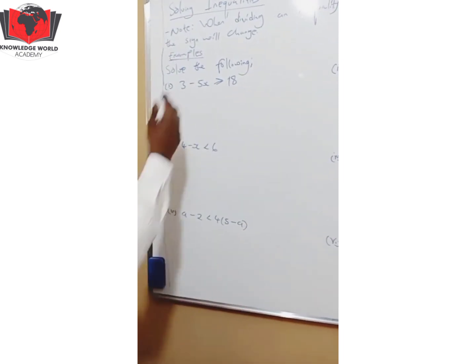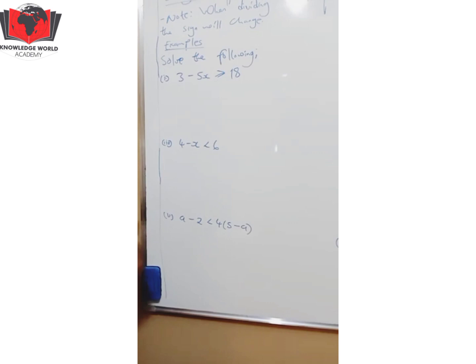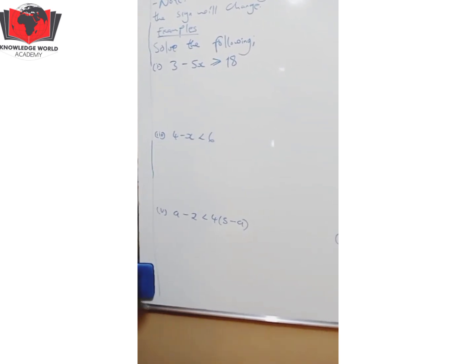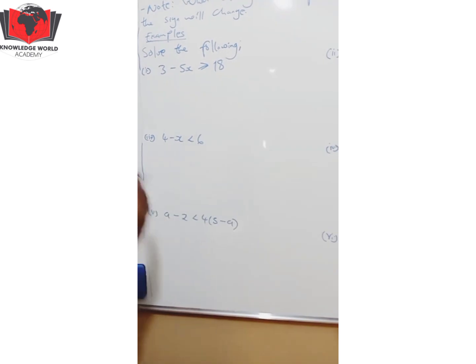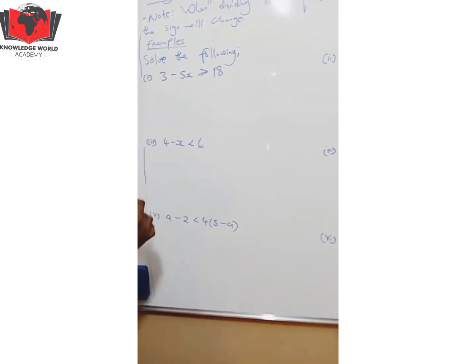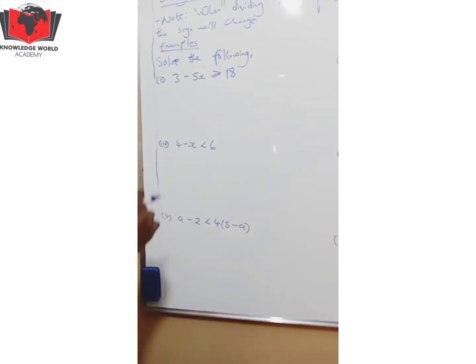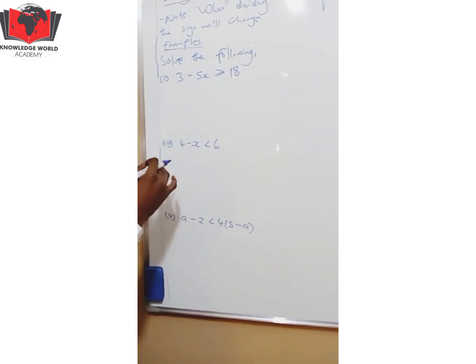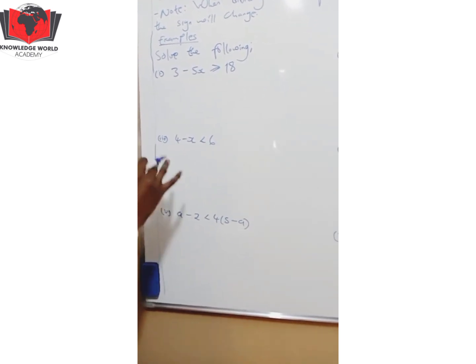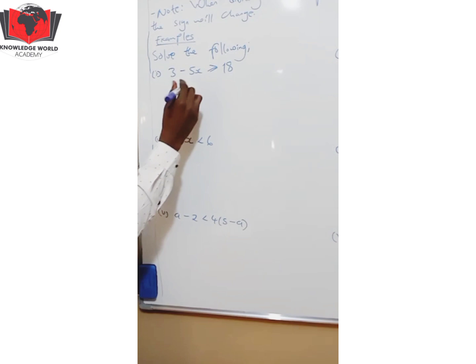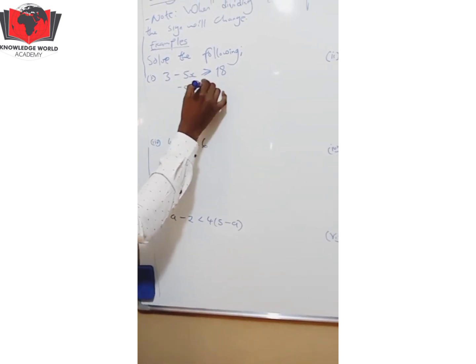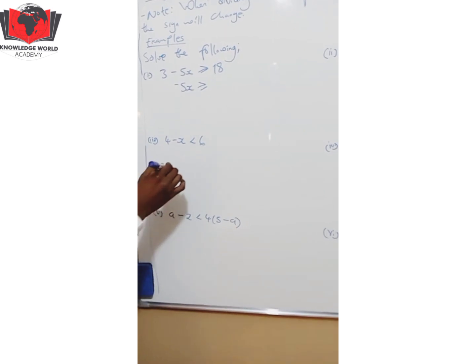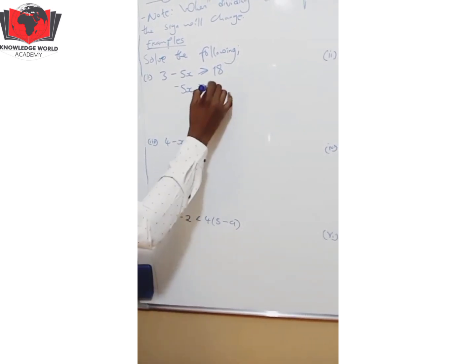Examples. Solve the following. Let's start with this first example. You have 3 - 5x ≥ 18. Solving inequalities is more like solving equations. It's all about inequalities and you must pay attention to the signs. I'm going to get my -5x is greater or equal to, I have to group the like terms. 18.